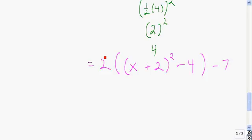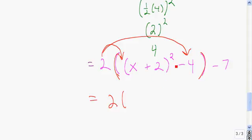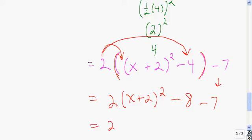The next step is to take this 2 and distribute it inside the outer parentheses. We end up with 2 times x plus 2, quantity squared. Then 2 times negative 4 is negative 8, so we have minus 8, then minus 7. Finally, minus 8 minus 7 is minus 15. Our answer is 2 times x plus 2, quantity squared, minus 15.